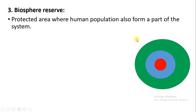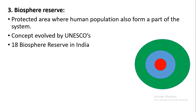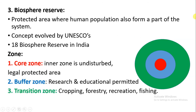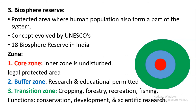Next is the biosphere reserve. This is a kind of protective area where the human population also forms part of the reserved area. This concept was evolved by UNESCO, and in India there are about 18 biosphere reserves. Biosphere reserves are divided into three zones: the core zone, the buffer zone, and the transition zone. The core zone is the inner undisturbed legally protected area reserved for animals. The buffer zone is where research and educational activities for students and researchers are permitted. The transition zone is for cropping, forestry, recreation, and fishing. The main function of a biosphere reserve is conservation of animals as well as development for students, teachers, and research and scientific institutes.